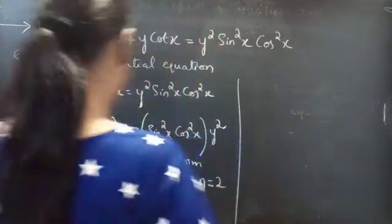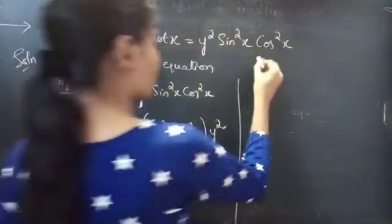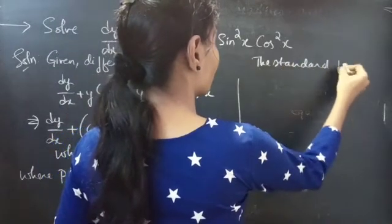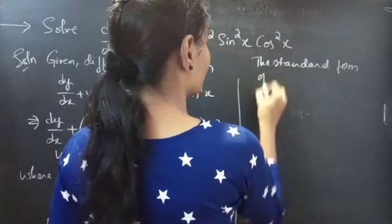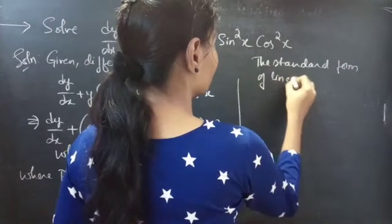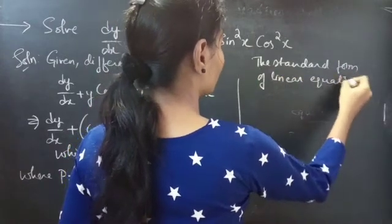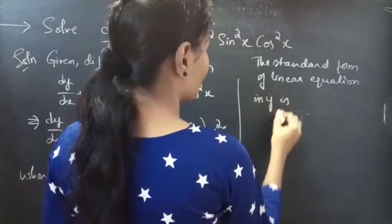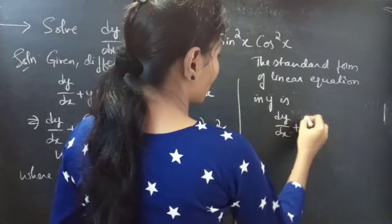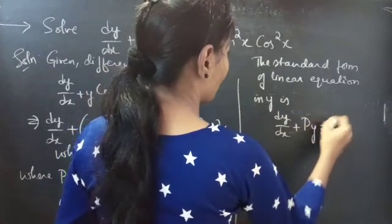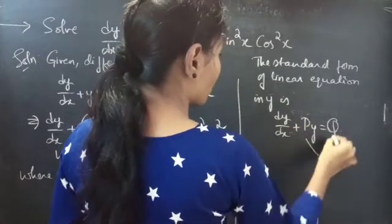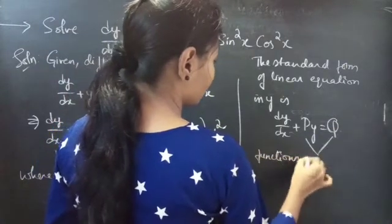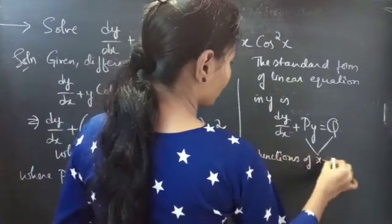We know that the standard form of a linear equation in y is dy/dx plus p·y equals q, where p and q are either functions of x alone or constants.